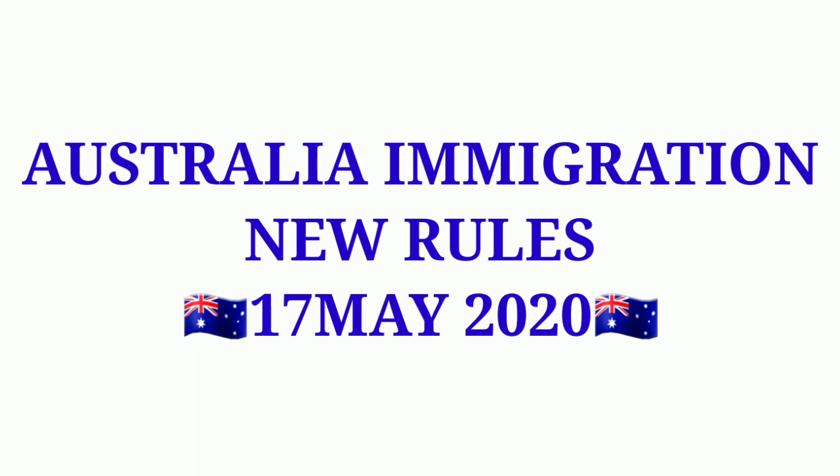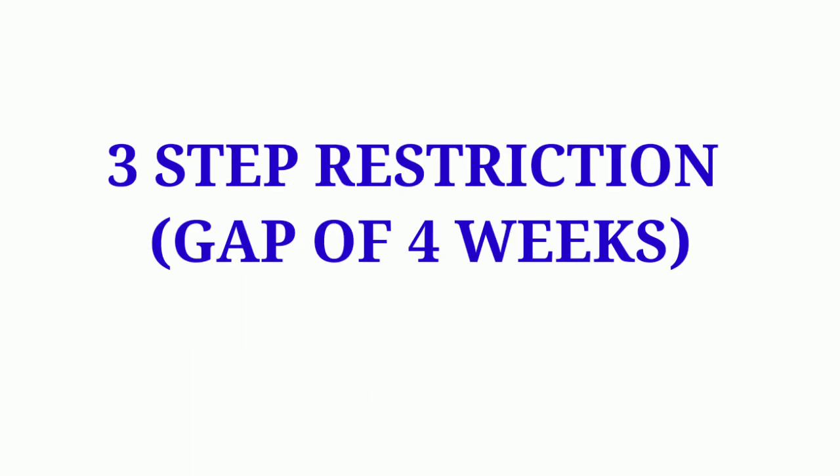The Australian government has introduced a three-step restriction framework along with some international updates. There will be a gap of four weeks between each step — the first step restriction will be applied, then after four weeks the second, and after another four weeks the third step restriction will be applied.